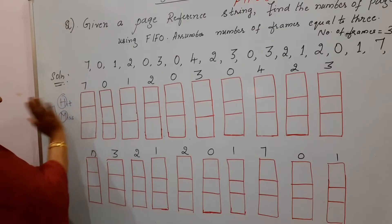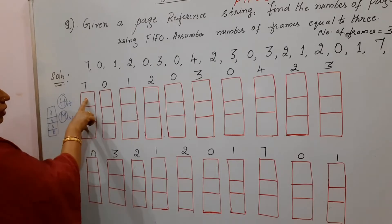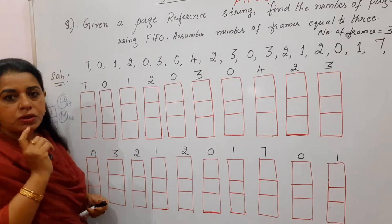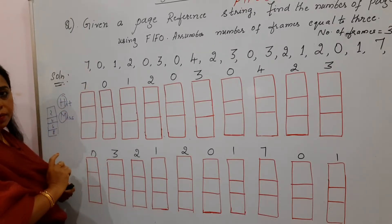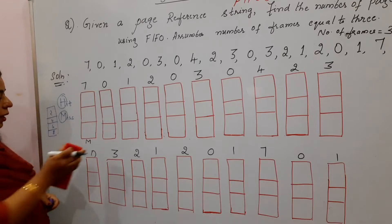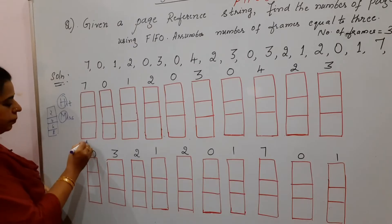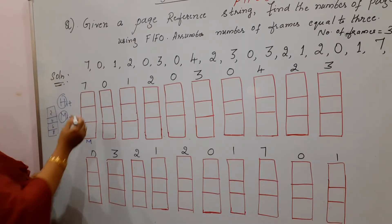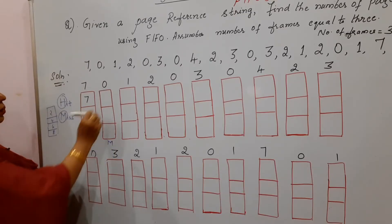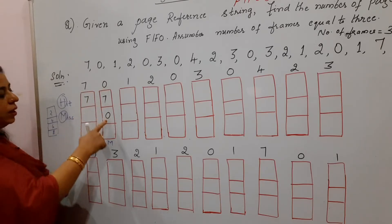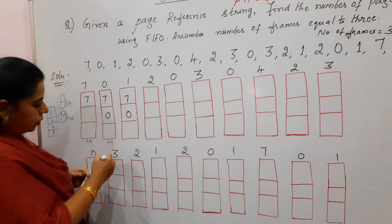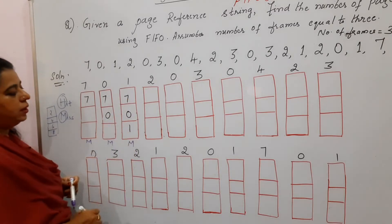Initially, we assume there are no pages in the physical frame and the frames are 3. Now start placing pages. Page 7 is not present — it is a miss, write M, and place page 7. Page 0 is not there — miss, write M, place 0. Page 1 is not there (only 7 and 0 are present) — miss, write M, place 1. Now all 3 frames are filled. Once you go to the fourth page, you must decide which page to replace using FIFO — the page which entered first should go out first. To place page 2, remove page 7 (it appeared 3 times, the oldest). Write M and place 2.